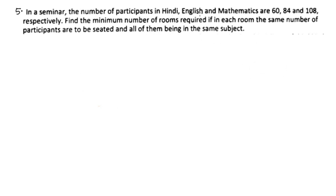That's why one room is for Hindi, one for English, and one for Mathematics. All of them are in the same subject. The same number of participants in each room. We can have the minimum number of rooms if the number of participants in each room divides each group equally.